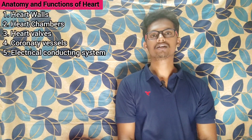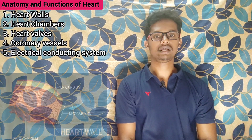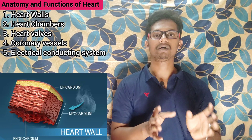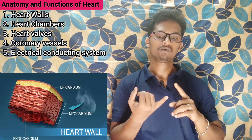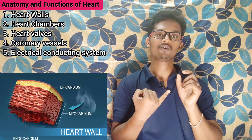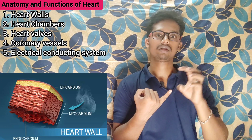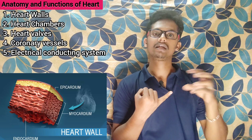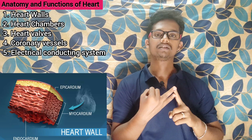Heart walls. If you look at the heart's wall, it's made up of three layers. The first one is the endocardium. 'Endo' means inside, so this is the inner layer of the wall.